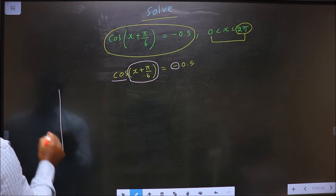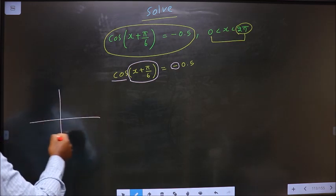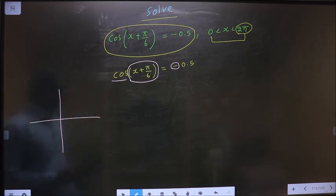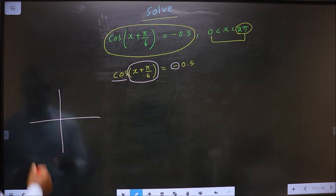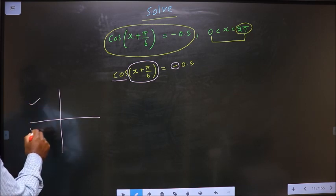So now we should check in what all quadrants is cos negative. It is all silver tea cups. Cos is negative in the second and in the third.